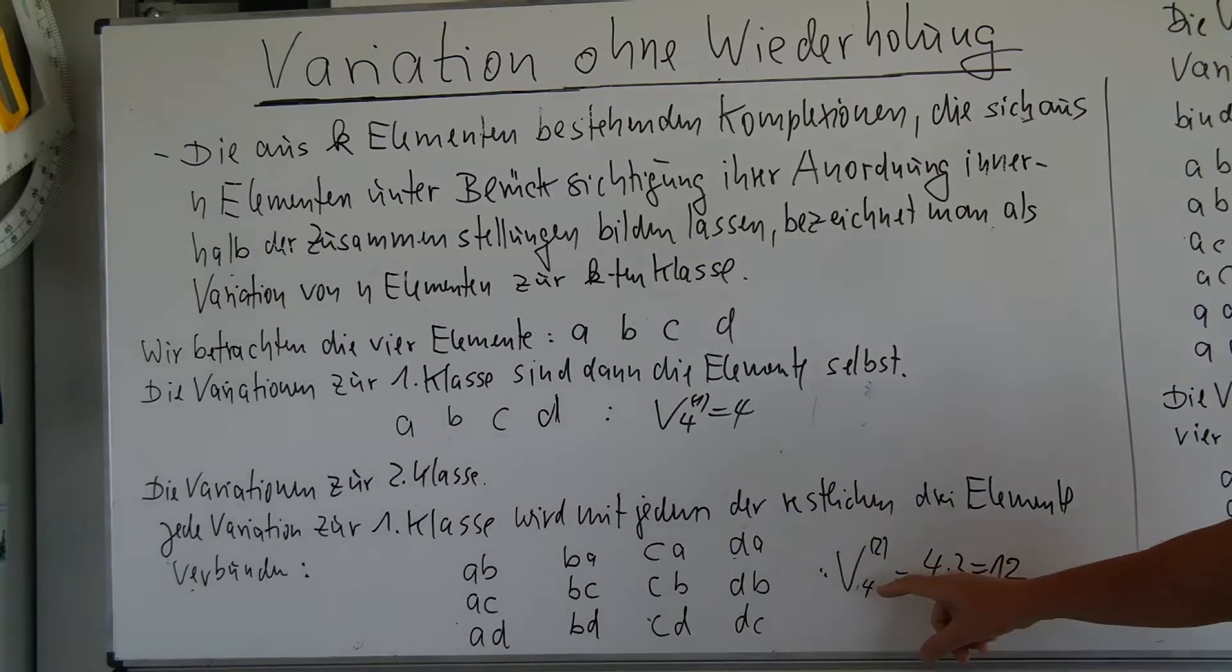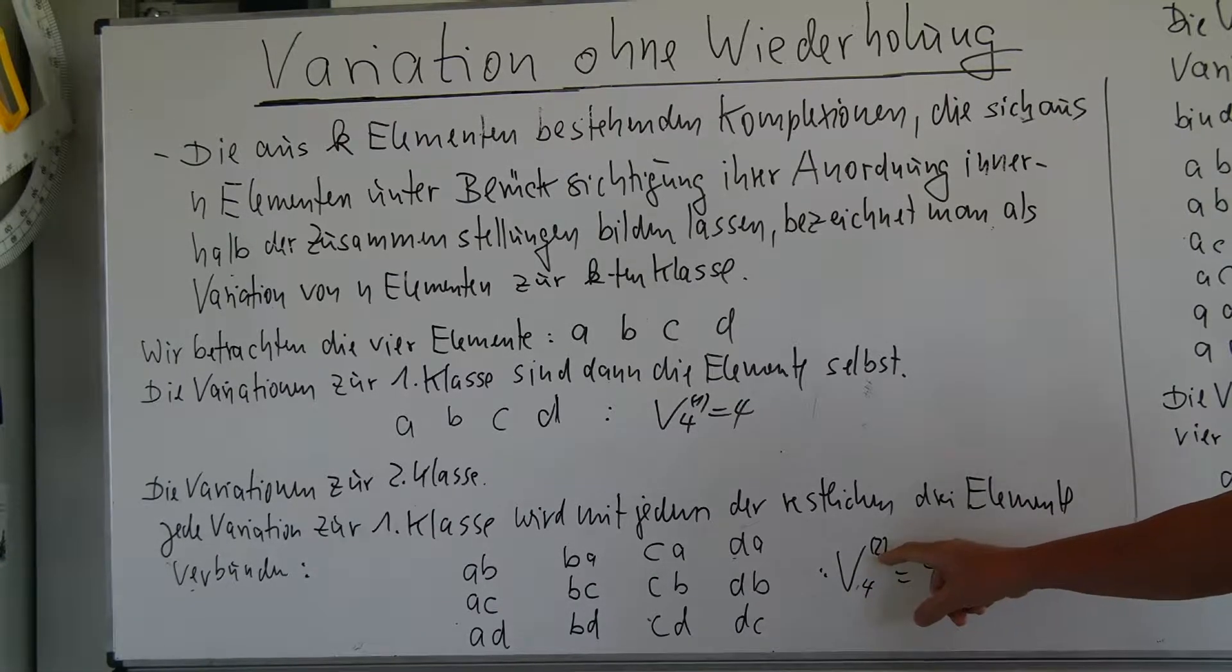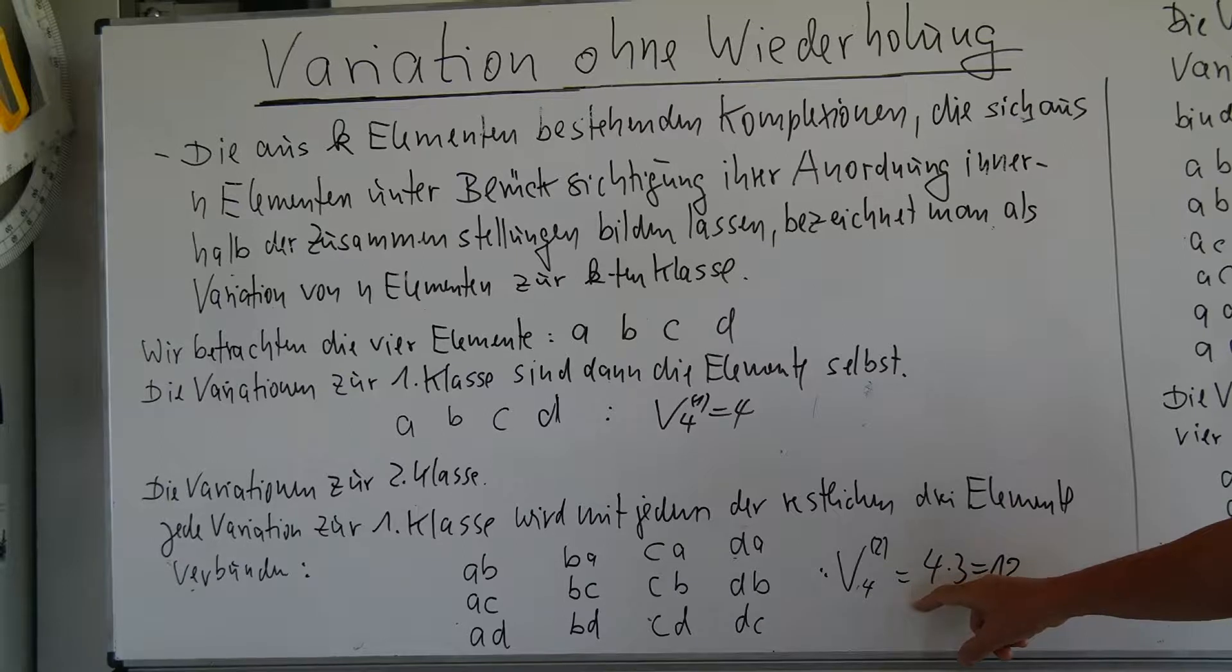Das Ganze schreiben wir dann Variation von vier Elementen zur zweiten Klasse und das berechnet sich dann aus 4 mal 3, das sind 12.